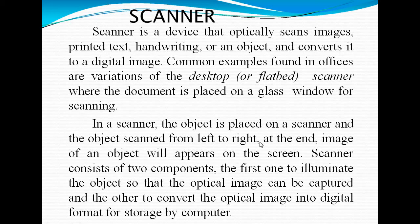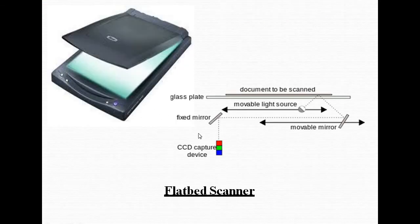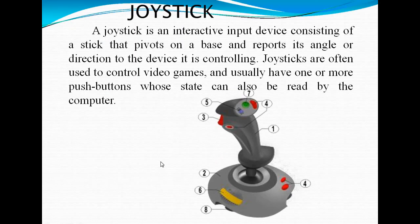A scanner is basically used to scan images, printed text, handwriting, or objects and convert them into digital images. Flatbed desktop scanners place documents on a glass window for scanning. A joystick is an input device used primarily for gaming, with push buttons — back button and front button — for user interaction.